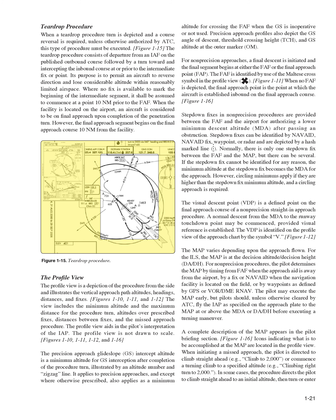The Profile View is a depiction of the procedure from the side and illustrates the vertical approach path altitudes, headings, distances, and fixes. The view includes the minimum altitude and maximum distance for the procedure turn, altitudes over prescribed fixes, distances between fixes, and the missed approach procedure. The profile view aids in the pilot's interpretation of the IAP but is not drawn to scale. The precision approach glide slope, GS, intercept altitude is a minimum altitude for GS interception after completion of the procedure turn, illustrated by an altitude number and zigzag line. It applies to precision approaches and also as a minimum altitude for crossing the FAF when the GS is inoperative or not used. Precision approach profiles also depict the GS angle of descent, threshold crossing height, TCH, and GS altitude at the outer marker, OM. For non-precision approaches, a final descent is initiated at either the FAF or the final approach point, FAP. The FAF is identified by use of the Maltese cross symbol in the profile view.